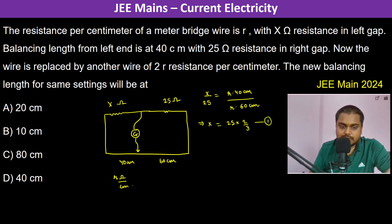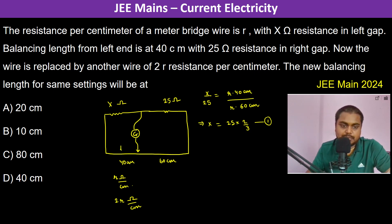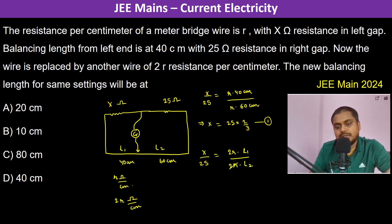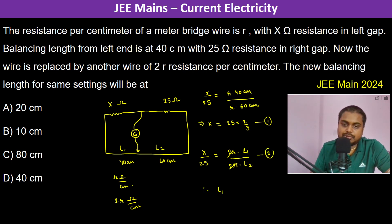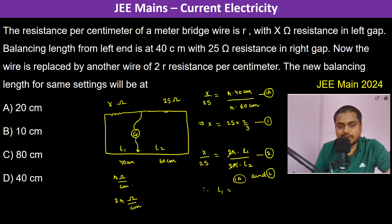Now we have put 2r ohm per centimeter. So what is going to be the balancing length? Let it be l1 and l2. Therefore X by 25 should be equal to 2r into l1 divided by 2r into l2. As clearly visible, l1 by l2 is again X by 25 only. Comparing equation 1 and equation 2, l1 is again equal to 40 centimeters.